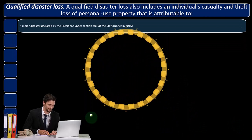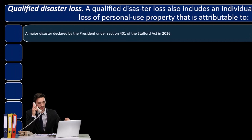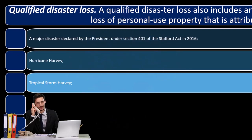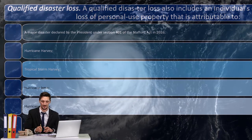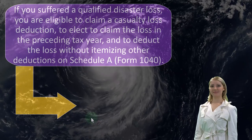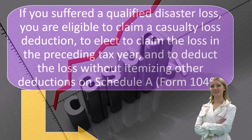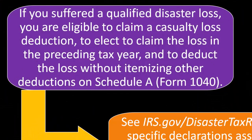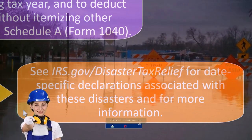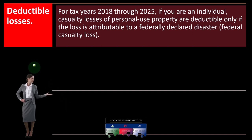Qualified disaster loss: a qualified disaster loss also includes an individual's casualty and theft loss of personal use property attributable to a major disaster declared by the President under Section 401 of the Stafford Act. If you suffered a qualified disaster loss, you are eligible to claim a casualty loss deduction, to elect to claim the loss in the preceding tax year, and to deduct the loss without itemizing other deductions on Schedule A, Form 1040. See IRS.gov/disaster-relief for date-specific declarations associated with disasters. Make sure you look up the actual disaster to get the proper designation for correct recording on the tax return.